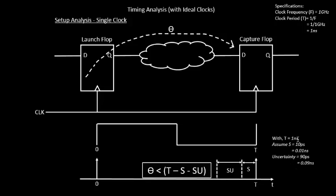Bringing in real numbers: with a clock period of 1 nanosecond, a setup time of 10 picoseconds, and an uncertainty of 90 picoseconds, the combinational delay requirement becomes T - S - SU = 1ns - 10ps - 90ps, which is roughly 0.9 nanoseconds. So 0.9 nanoseconds is your new combinational delay requirement. This is one of the next practical scenarios we've brought into the picture.